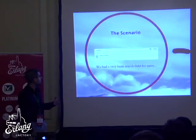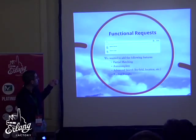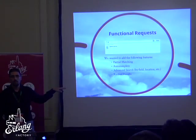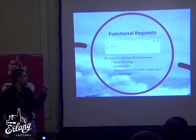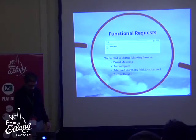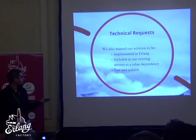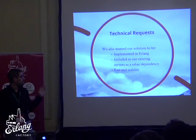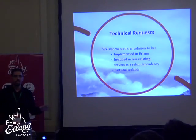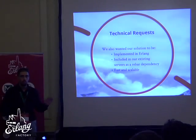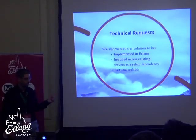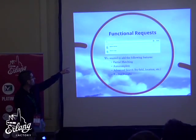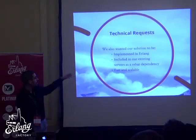We wanted to improve that. We wanted something way better, where you could start typing and it would filter results, ranking them according to, for instance, people who are near you. We also wanted partial matching, and we wanted to match by other fields like phone numbers and emails. We wanted this implemented in Erlang because every server we had was in Erlang. We had a lot of Erlang developers and not many with other language knowledge, so we wanted to be as Erlang-y as possible. And it had to be fast and scale, because each time you type a keyword, it makes a request.